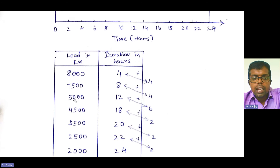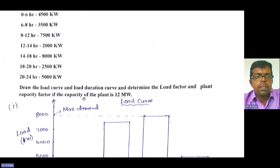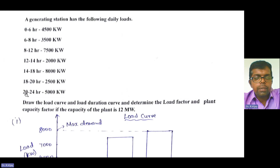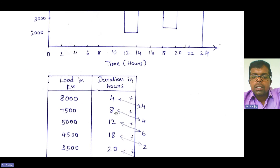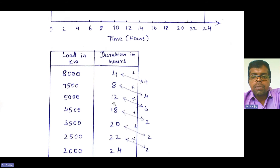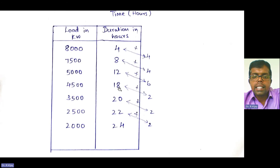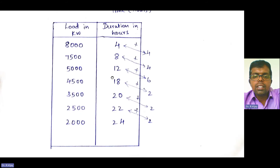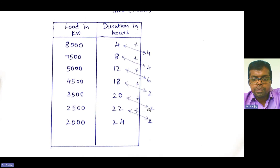4500 kilowatts is for 6 hours, so 12 plus 6 equals 18 hours. 3500 kilowatts is for 2 hours, so 18 plus 2 equals 20 hours. 2500 kilowatts is for 2 hours, so 20 plus 2 equals 22 hours. 2000 kilowatts is for 2 hours, so 22 plus 2 equals 24 hours. You need to sort and mark the cumulative duration this way.